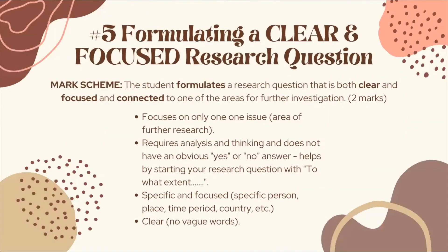The next thing will be formulating a clear and focused research question. The mark scheme mentions that the research question formulated by the student should be both clear, focused, and connected to one of the areas for further investigation. You'll be getting two marks for the research question because you just have to state the research question — no explanation behind it. You'll only be focusing on one issue, one area of further research. Some questions may give you a few options on the area of further research, so you should know to only focus on one, because the whole point of a research question is to be clear — if you focus on more than one area, that clarity will no longer be there.